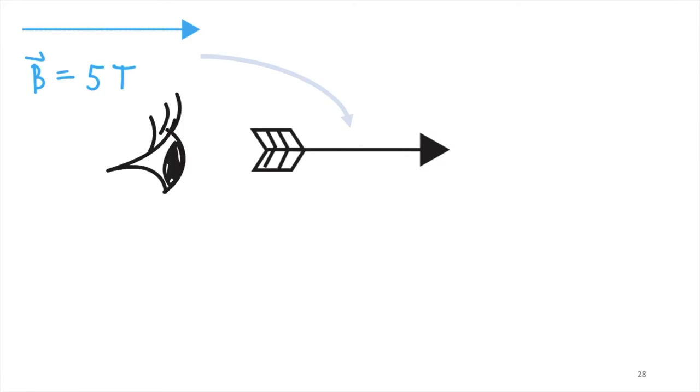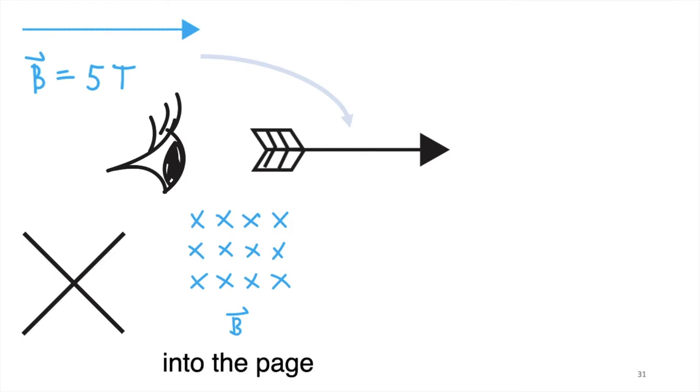Now if I look at the arrow when the arrow is pointing away from me, then what I can see is the cross hairs of the feather. When the directions of the vectors are represented by this symbol, then we call the direction of such vectors as into the page.